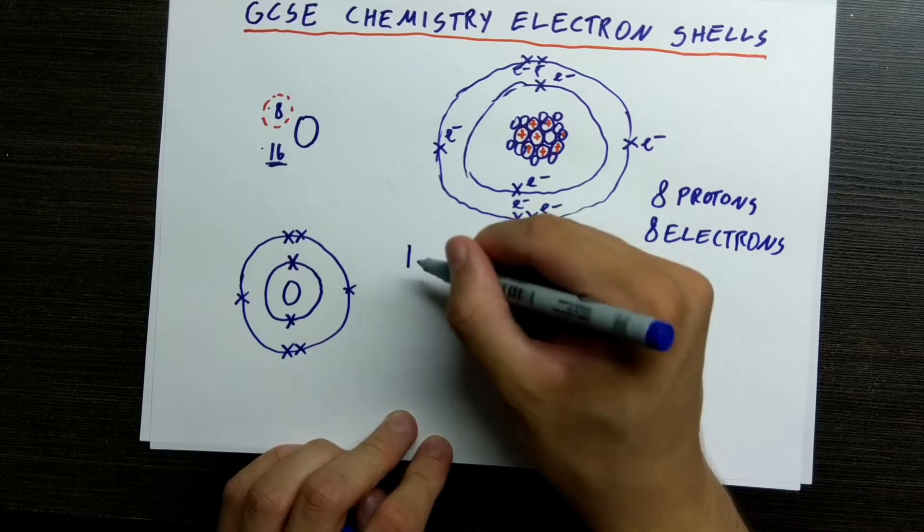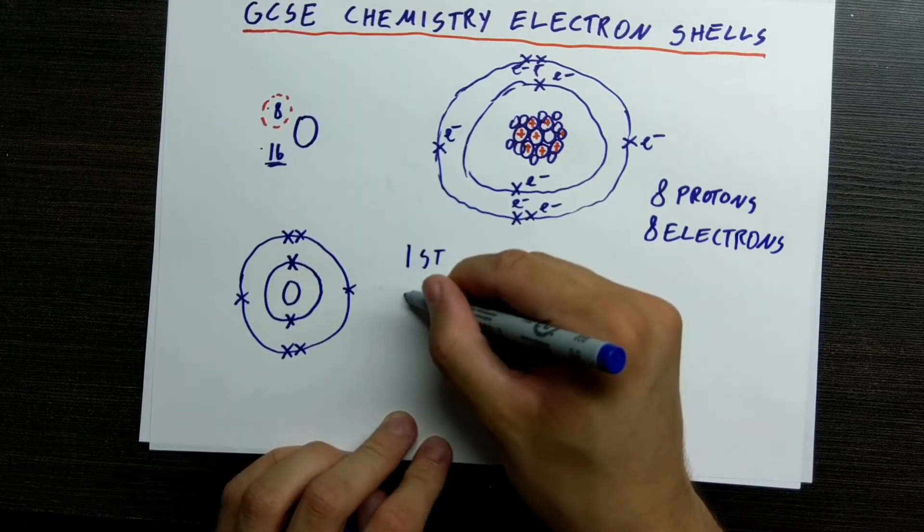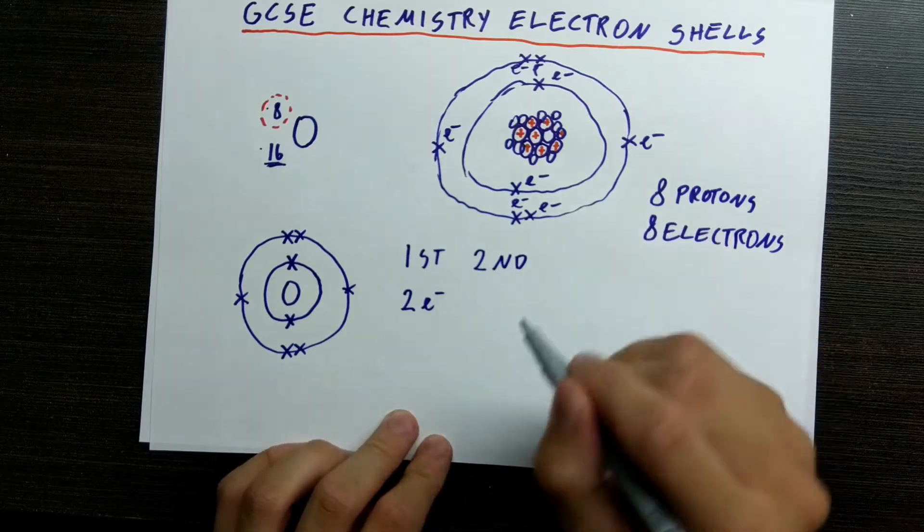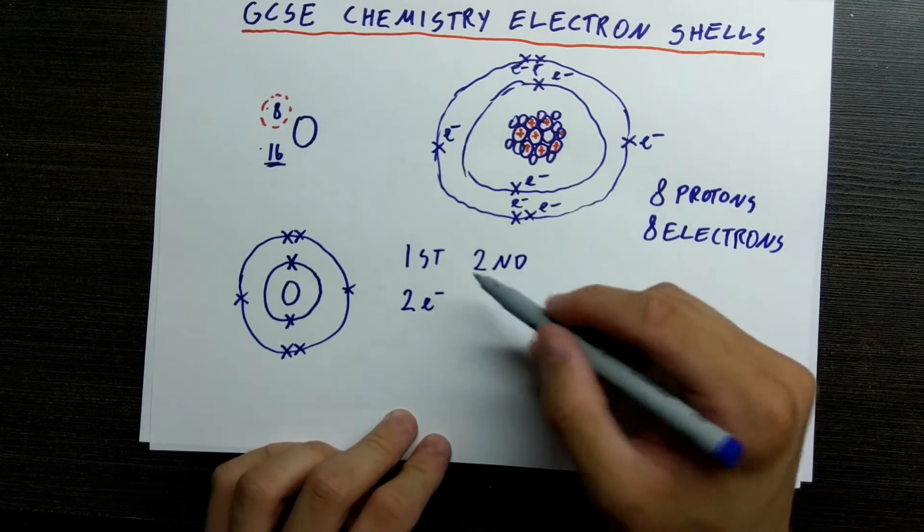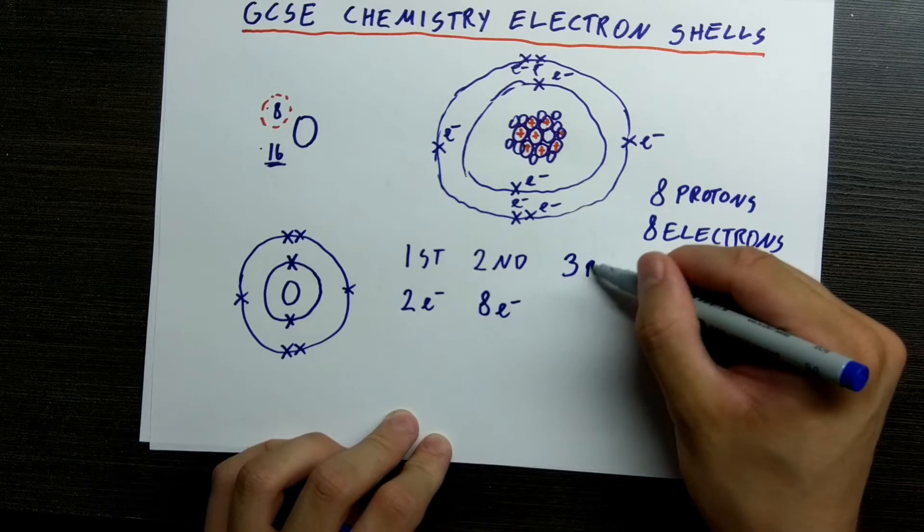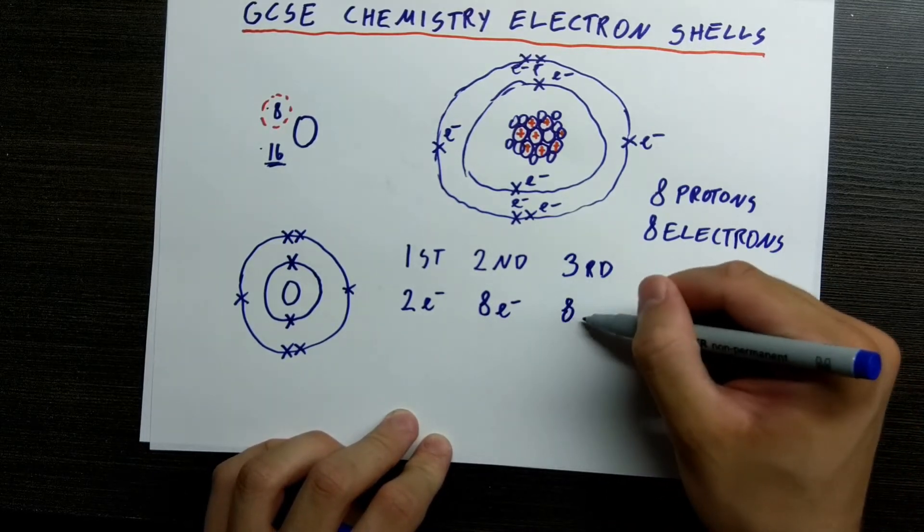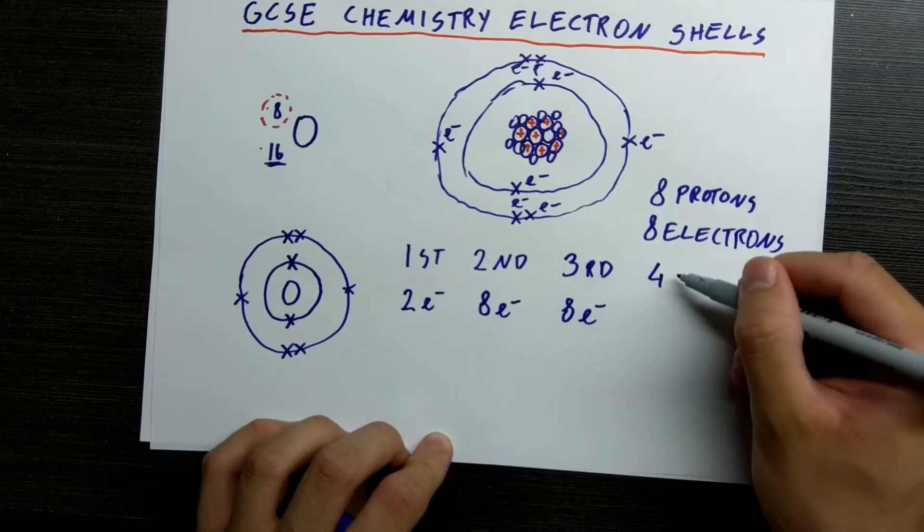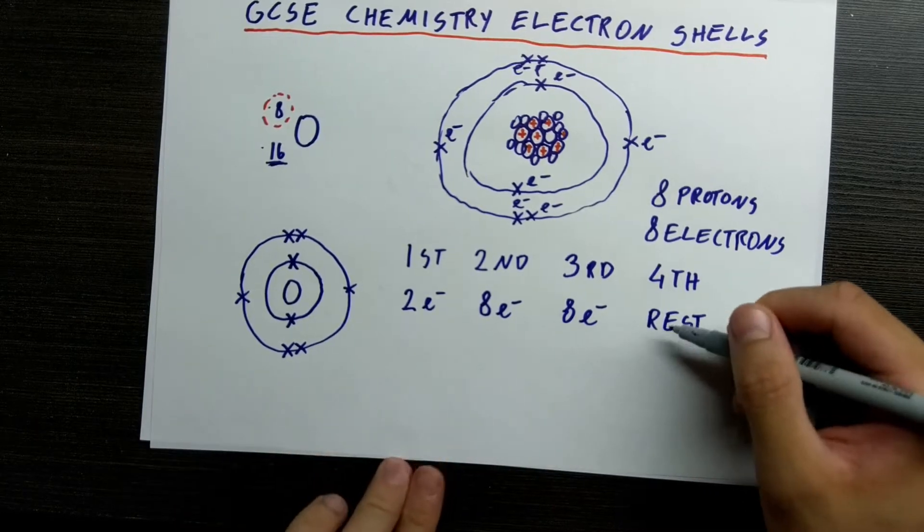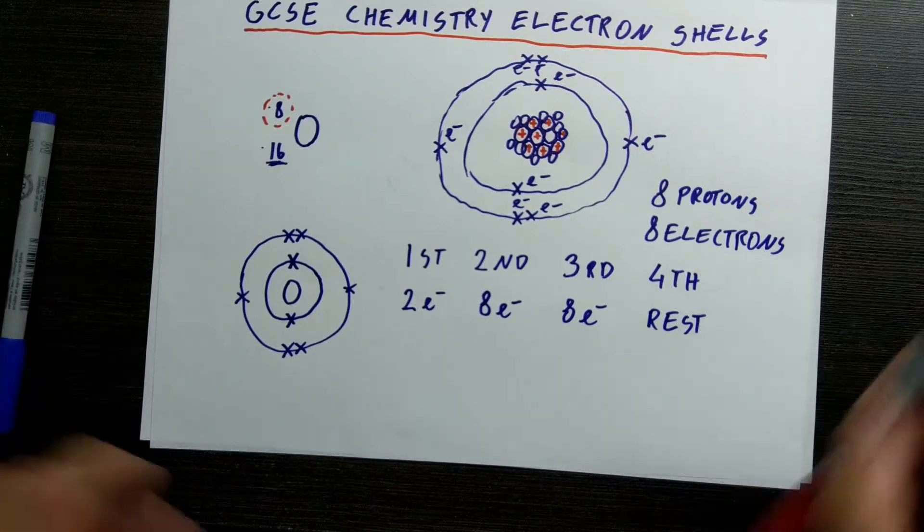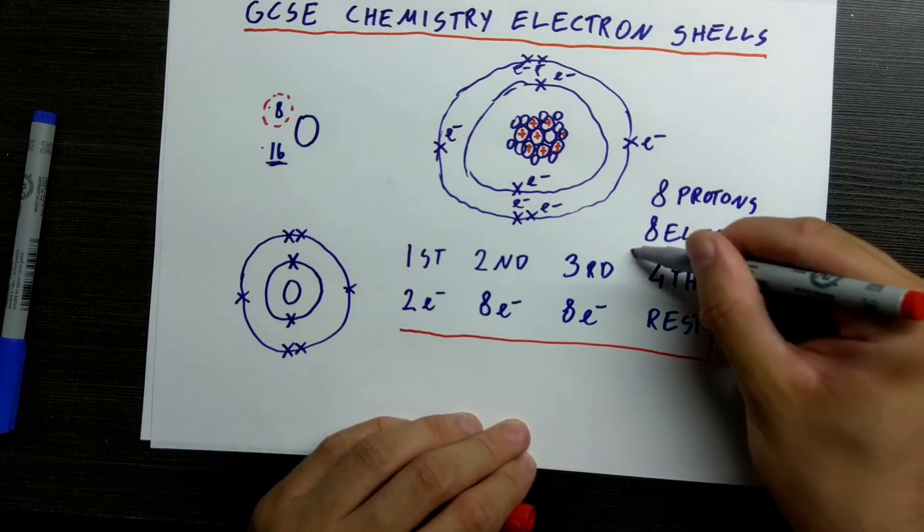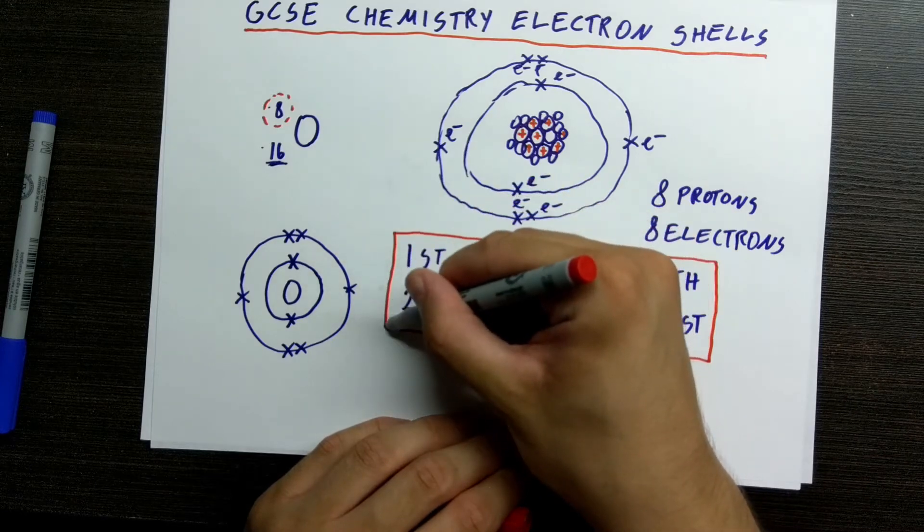In the first shell, we have two electrons. In the second shell, we need to remember these. Unfortunately, there is no way around it. You just have to remember it. In the second shell, we have eight electrons. In the third shell, we also have eight electrons. And in the fourth shell, we will have the rest. As far as you're concerned, we just put the rest of the leftover electrons in the fourth shell. This is very important to remember.